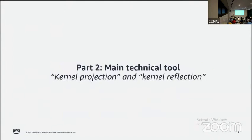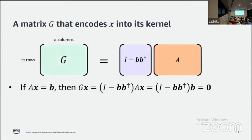That concludes the first part. The second part is about the main technical tool we'll use in our algorithm. To use this tool, we need a matrix G for which x is in the kernel. It's easy to construct such a matrix G by letting it equal the product of the orthogonal complement onto the vector b multiplied by the matrix A.